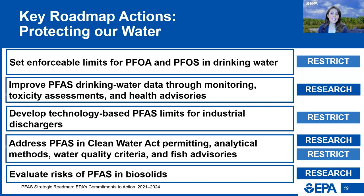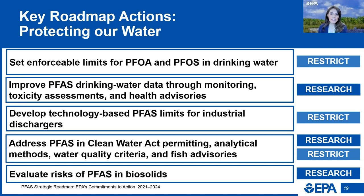Our Office of Water is taking an extensive set of actions to restrict PFAS through EPA's programs to protect drinking water and our lakes, rivers, and streams. On March 14th, EPA took a key step to protect public health by proposing the first-ever national drinking water standard for six PFAS, fulfilling a foundational commitment in the PFAS strategic roadmap. Through this proposed rule, EPA is leveraging the latest science and complementing state efforts by proposing to establish legally enforceable levels for six PFAS known to occur in drinking water. The rule is currently open for public comment, and you can learn more at www.epa.gov/PFAS.